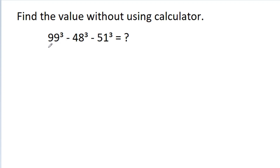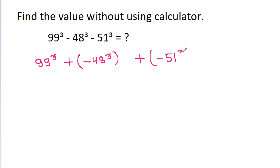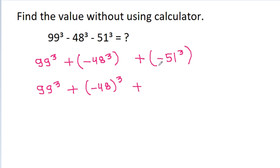In this video, we have to find the value of 99 cube minus 48 cube minus 51 cube without using a calculator. So it is 99 cube, and minus 48 cube will be plus times minus 48 cube, and minus 51 cube will be plus times minus 51 cube. So it is 99 cube plus minus 48 cube, which is minus 48 cube, plus minus 51 cube, which is minus 51 cube.